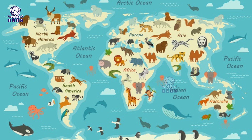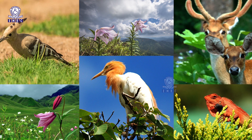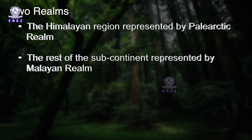Biogeographic realms are large spatial regions within which ecosystems share a broadly similar biota. A realm is a continent or subcontinent-sized area with unifying features of geography, fauna and flora. The Indian region is comprised of two realms: the Himalayan region represented by the Palearctic realm, and the rest of the subcontinent represented by the Malayan realm.